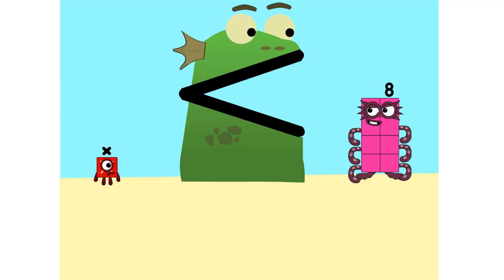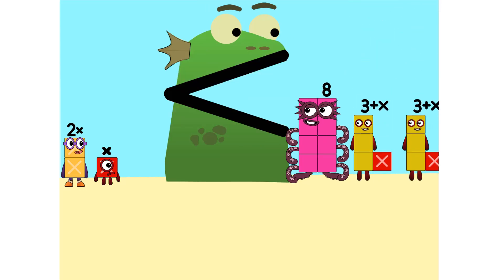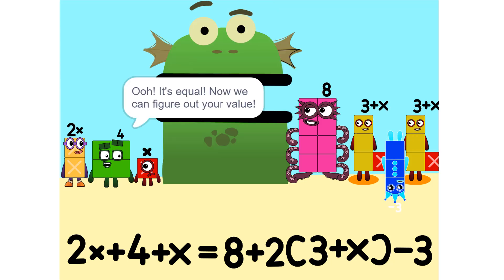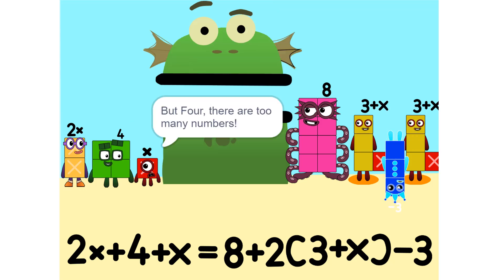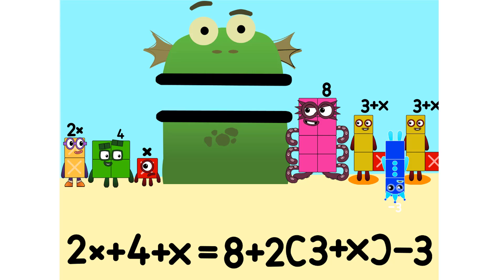So we add some more: 2 times x equals 2x. It's equal. Now we can figure out your value. But there are too many numbers — we'll never figure it out. Yes we can, if we do it step by step and use a pencil. So let's get started.